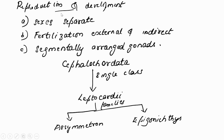Sense organs are present. Regarding reproduction and development: sexes are separate (gonochoristic). Fertilization is external and indirect. Gonads are arranged segmentally — segment-wise gonads are present in the body.